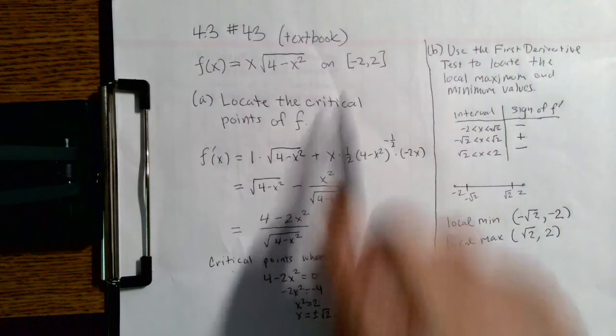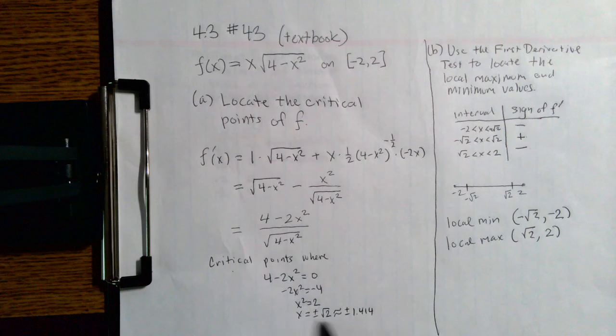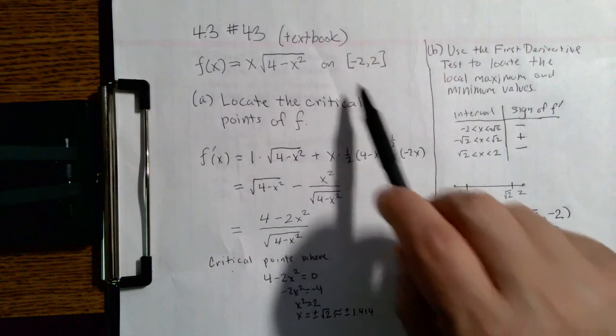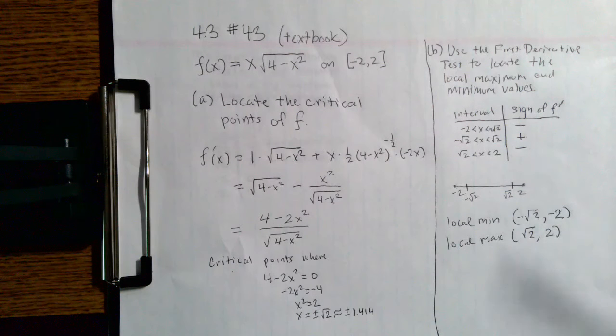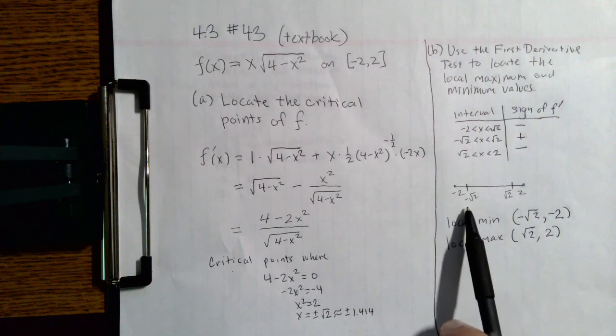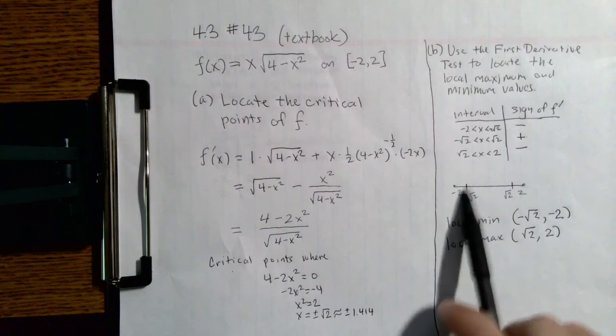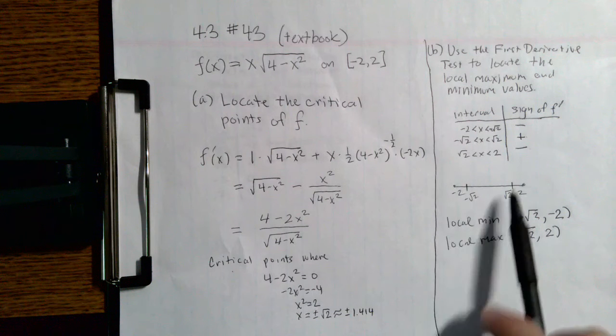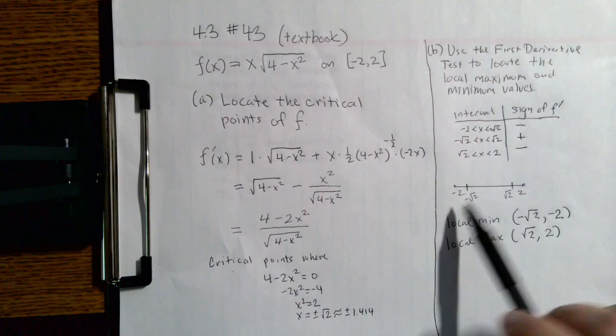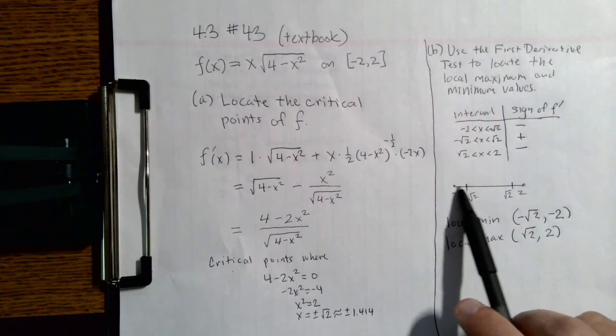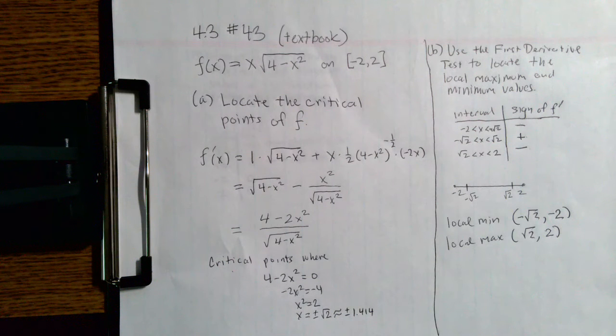So we take our critical points that we found over here. We look at our interval and think about how does the interval break up if we look at our two critical points as points within that interval. That's going to break up the interval into three pieces.